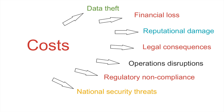Number four is legal consequences. A cyber attack may result in legal consequences because any hack or data breach might expose the company to legal liabilities, and anyone implicated could face criminal charges. For example, when very sensitive company information is stolen and that information is spread on the internet, anybody can get hold of that information and come with all sorts of claims against the company.